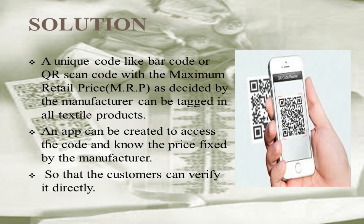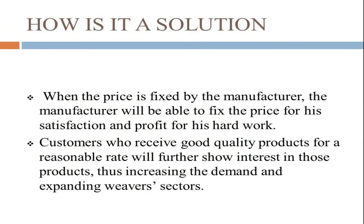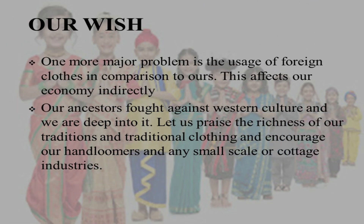Our solution is that a unique code — like a barcode or QR code — with the maximum retail price as decided by the manufacturer can be tagged on all textile products. An app can be created to access the code and know the price fixed by the manufacturer, so that customers can verify it directly. When the price is fixed by the manufacturer, the manufacturer will be able to ensure a fair profit margin. Customers who receive good quality products at a reasonable rate will show further interest in those products, thus increasing demand and expanding the weaver sectors.